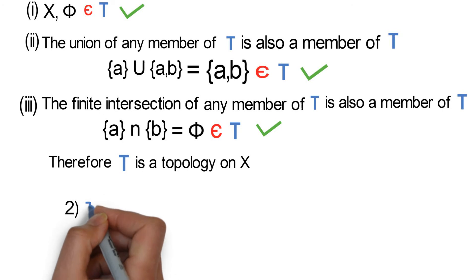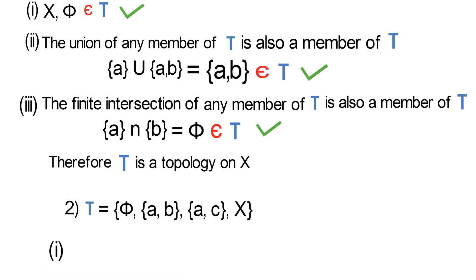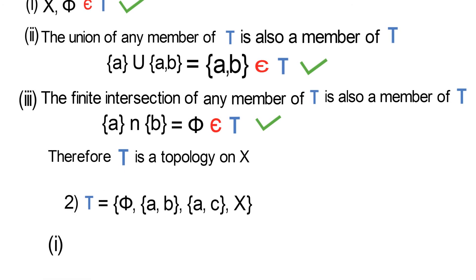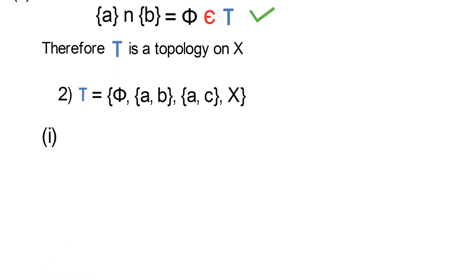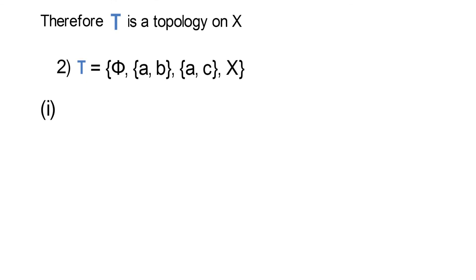Question 2: tau being equal to this set. We'll have to show that tau satisfies the conditions of a topology. We'll take the same steps we took in the first example, showing that conditions 1, 2, and 3 hold.